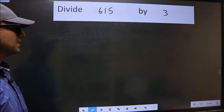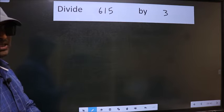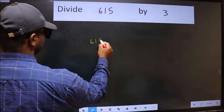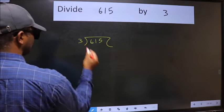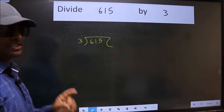Divide 615 by 3. To do this division, we should frame it in this way. 615 here, 3 here. This is your step 1.